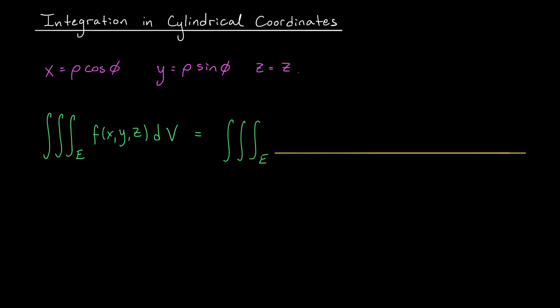Our motivation for defining cylindrical coordinates was in making our lives easier when evaluating certain triple integrals. This begs the question, how do you actually convert a triple integral in Cartesian coordinates to a triple integral in cylindrical coordinates? Well, the first thing we would have to do is get rid of these x, y, and z terms.